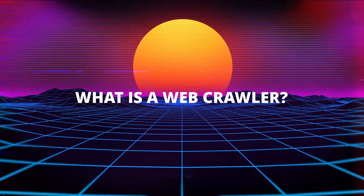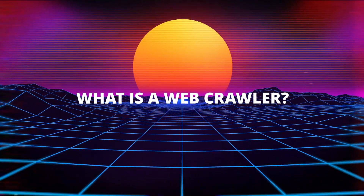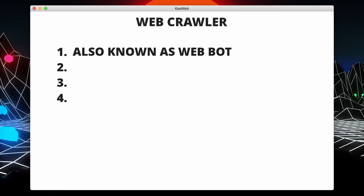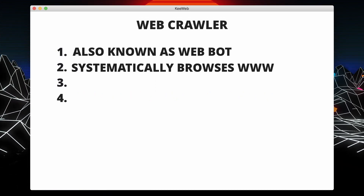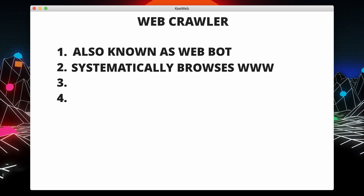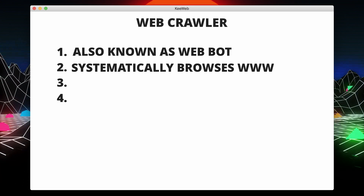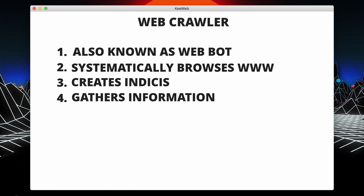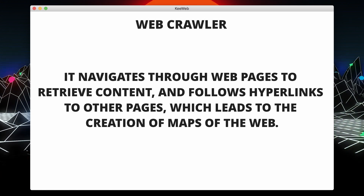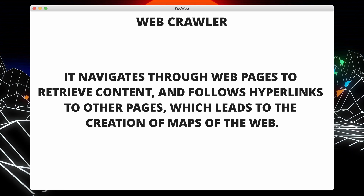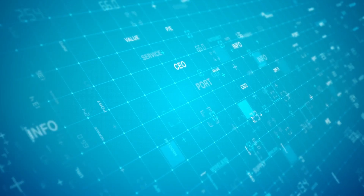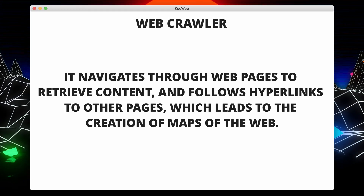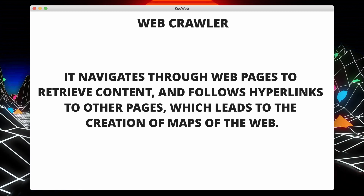Let's start by defining what a web crawler is. A web crawler, also known as a spider or web bot, is a computer program or script that systematically browses the world wide web. Its purpose is to index and gather information about websites. The primary function of a web crawler is to navigate through web pages, retrieve their content and follow hyperlinks to other pages, which leads to the creation of maps of the web.